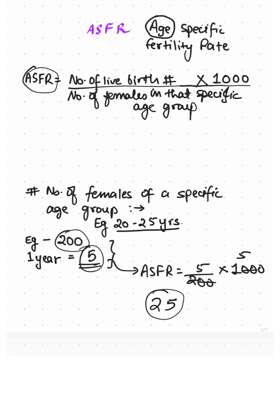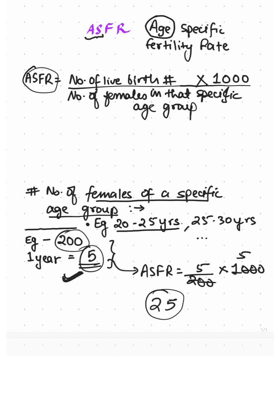We can conclude that the age-specific fertility rate is the number of live births given by the females of a specific age group, such as 20 to 25 years or 25 to 30 years. In our example, 200 females in the 20 to 25 age group gave birth to 5 children, so the age-specific fertility rate is 5 upon 200 multiplied by 1000, which is 25.